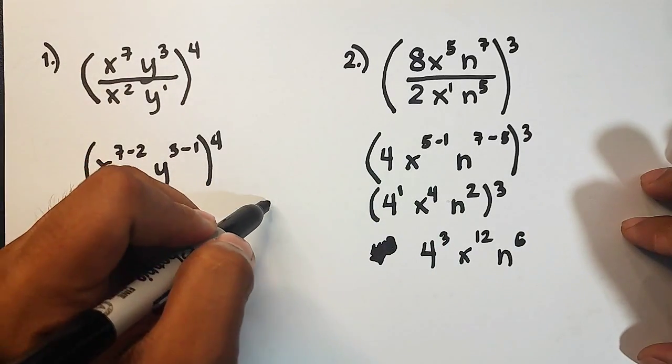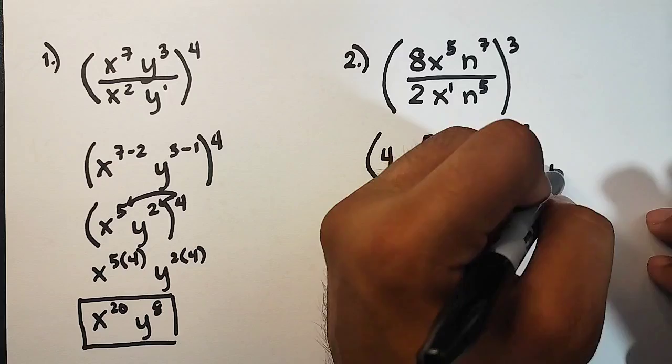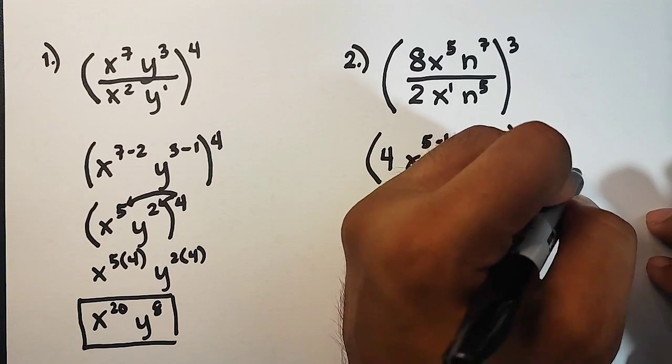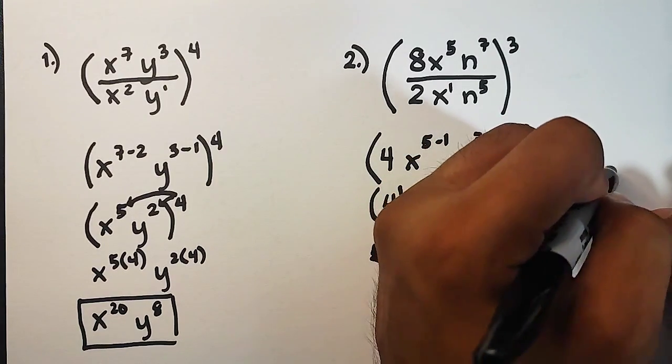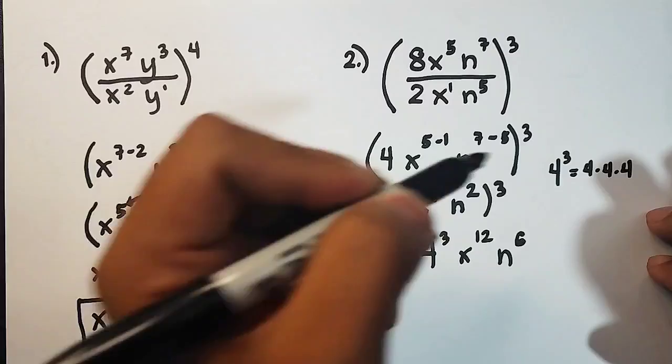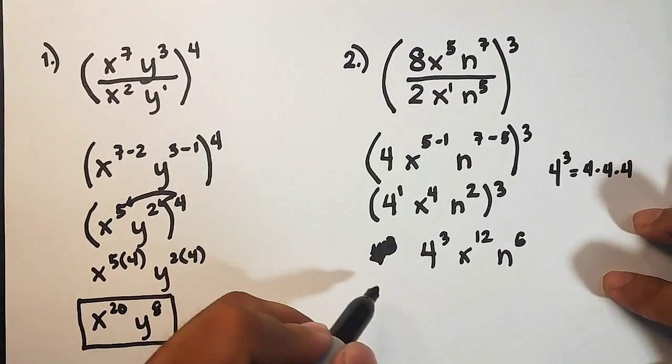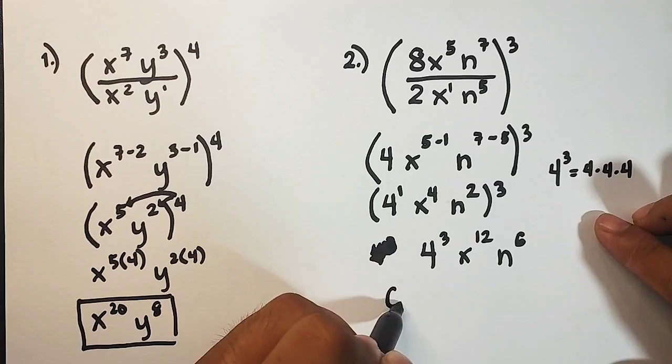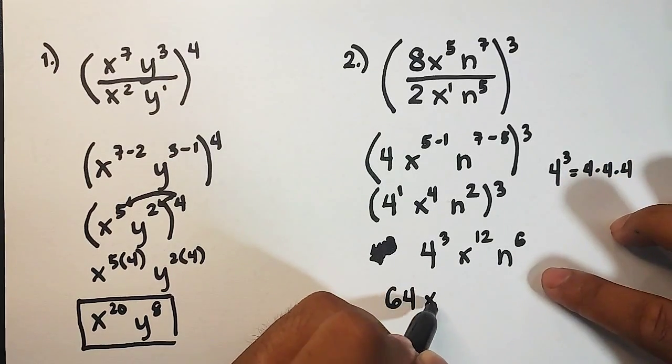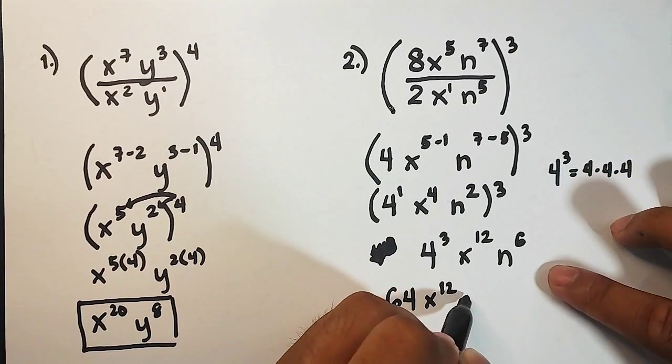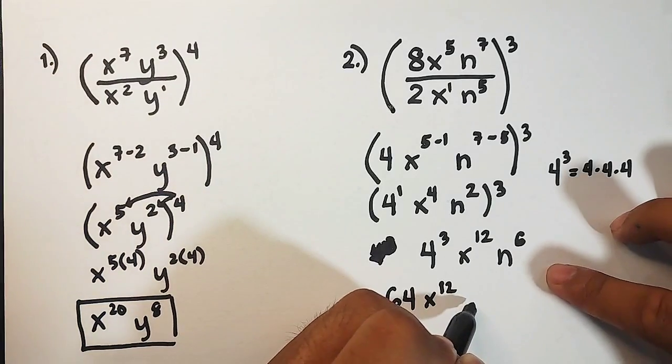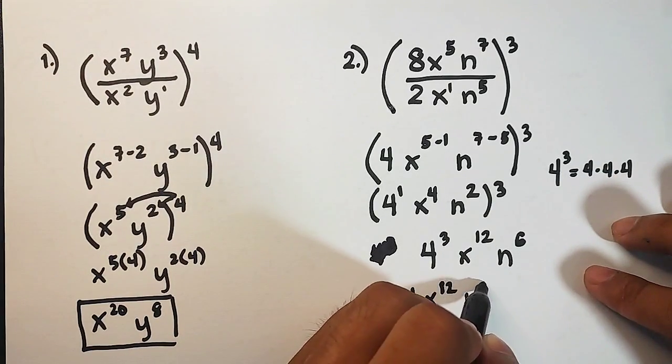Your 4, your 4 raised to 3, is the same as 4 times 4 times 4. You need to write it 3 times because the exponent is 3. So that is 64, then copy this, x raised to 12, and n raised to 6.